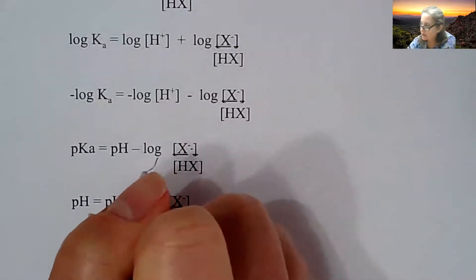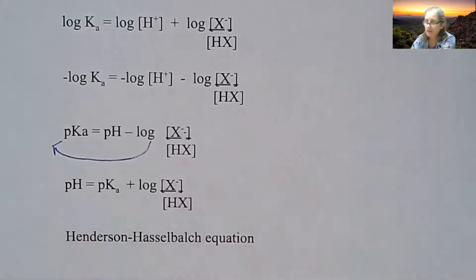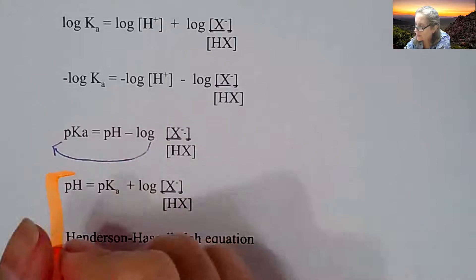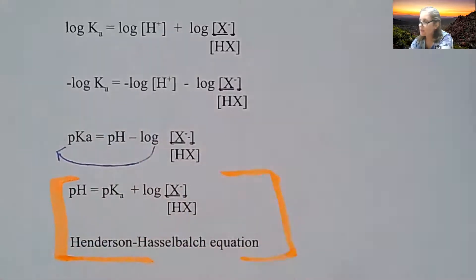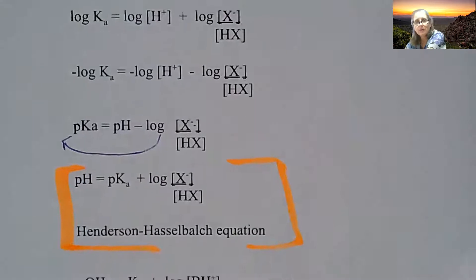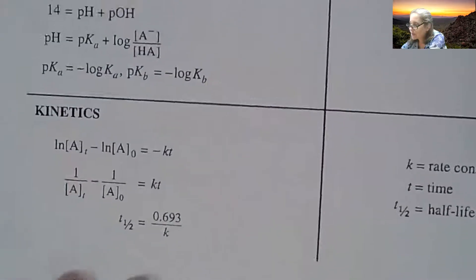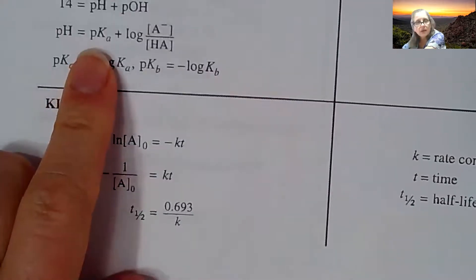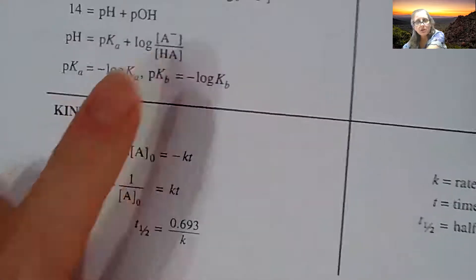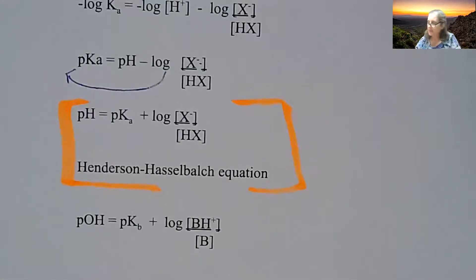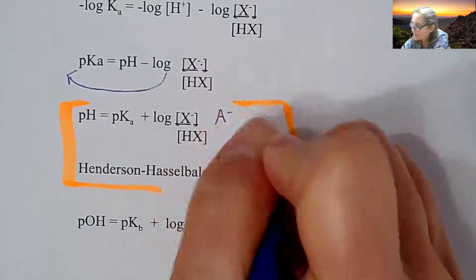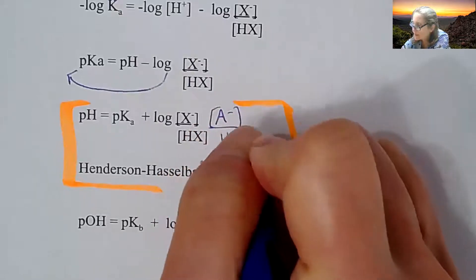So how you typically see this equation is you bring this over to this side, and you're left with this equation, which is called the Henderson-Hasselbalch equation, and this is the equation that's on your formula sheet. So you don't need to memorize this. It is already on there, so they do it as A- over HA.